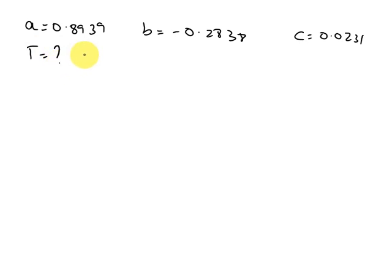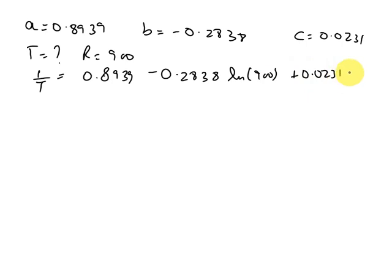Next, we have to find the temperature when R is 900 ohms. So that is 1/T equals A, 0.8939, putting in the equation, minus 0.2838 ln(900) plus 0.0231 times ln(900) whole square.